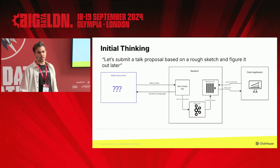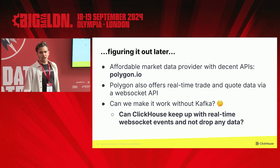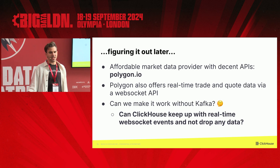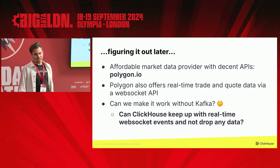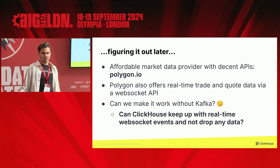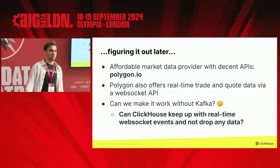As we started thinking through this, we needed to figure out who our data provider was going to be. Financial market data that's anywhere near real time is expensive, so that was hurdle number one — we needed to find something we could affordably demo that still demonstrated just how fast ClickHouse is. The only one we could find was polygon.io. But similar to all the other data providers, they all have API credit quota limits, and you can't really keep querying all these different stock tickers and dumping them into a Kafka topic because you'll run out of API credits very quickly.